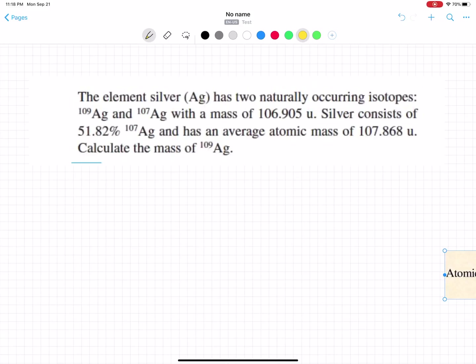Okay, the topic is isotopes. The element silver (Ag) has two naturally occurring isotopes: Ag-109 and Ag-107 with a mass of 106.905 unified atomic mass units. Silver consists of 51.82% of Ag-107 and has an average atomic mass of 107.868 unified atomic mass units. Calculate the mass. So let's understand the question first.